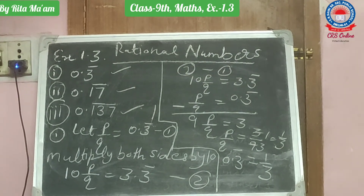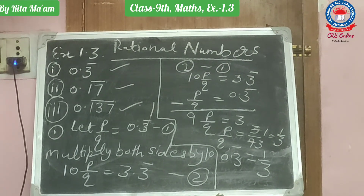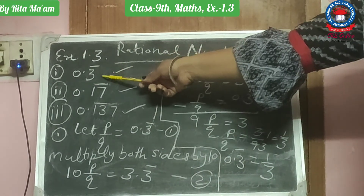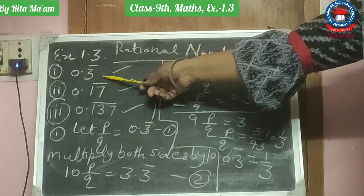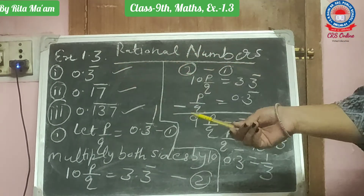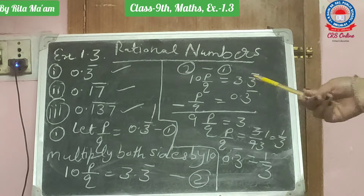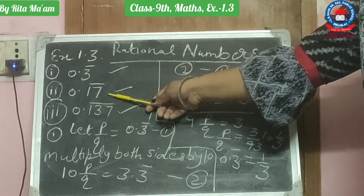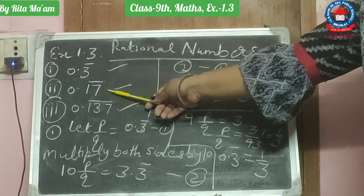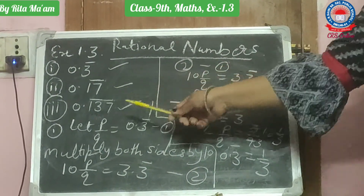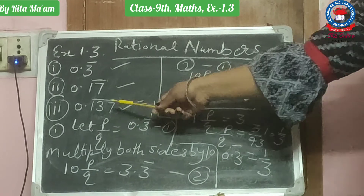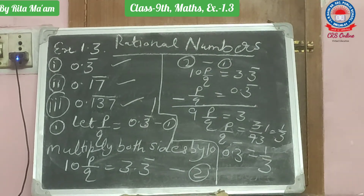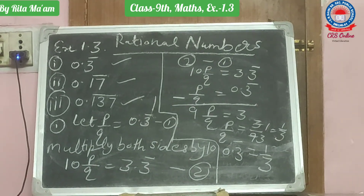Now I will tell you how you will represent a one-place digit repeating number in P upon Q form. Then I will tell you how a two-digit repeating number can be expressed in P upon Q form. After that, I will tell you how a three-digit number can be expressed in P upon Q form.